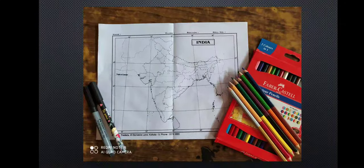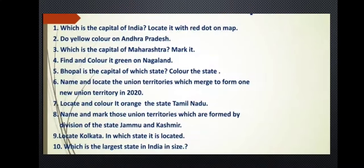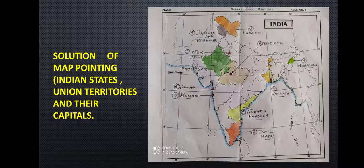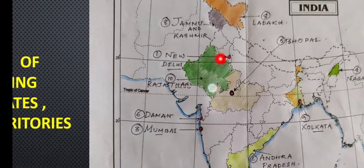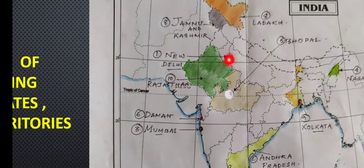One by one we will discuss about the questions which I have given on the last class and accordingly I will show you the map and where you have to locate it. The first question is: which is the capital of India and locate it with a red dot? The capital of India is New Delhi. I have given number one, New Delhi, and with a line I have shown it, and with the red dot I have marked it over there.